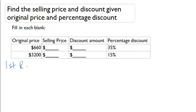Let's look at the first row. First we'll calculate the discount amount. The discount has to equal the original price of $660 times 35%. That will give us a discount of $231.